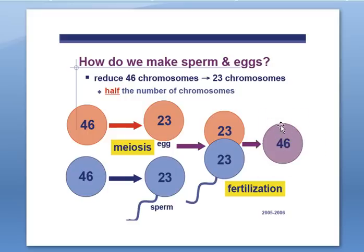The 46 chromosomes in that fertilized egg will be copied exactly by the process of mitosis to produce all the cells in your body.